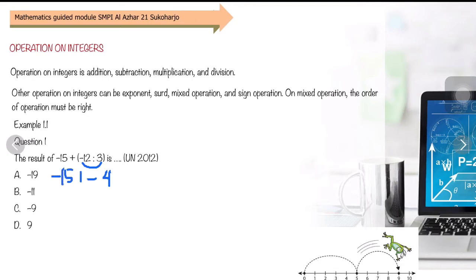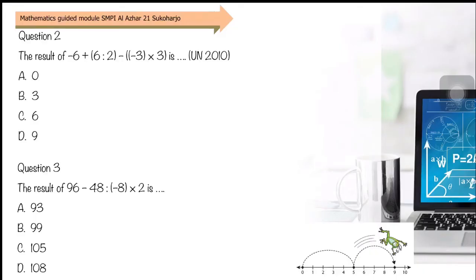Question 2: Negative 6 plus 6 divided by 2 minus negative 3 times 3. Work on the brackets first: 6 divided by 2 is 3, negative 3 times 3 is negative 9. Then negative 6 plus 3 equals negative 3, minus negative 9, which becomes plus 9, equals 6. So the answer is C.